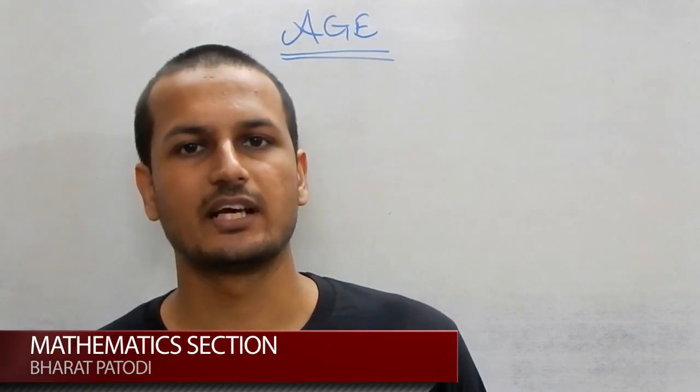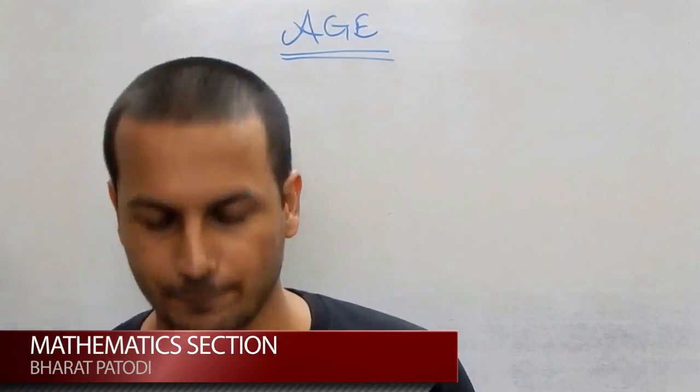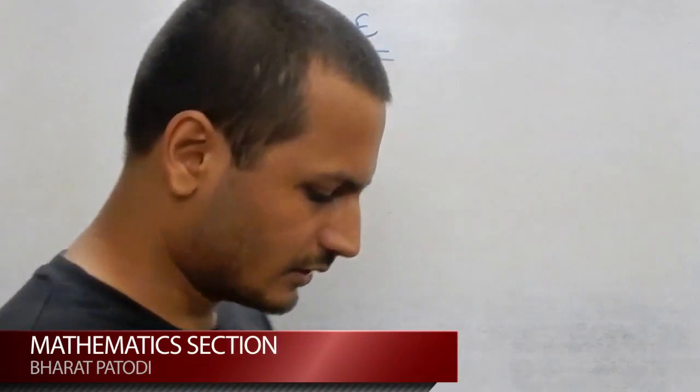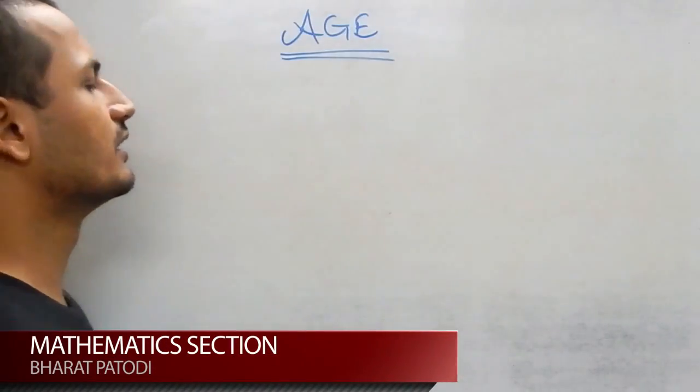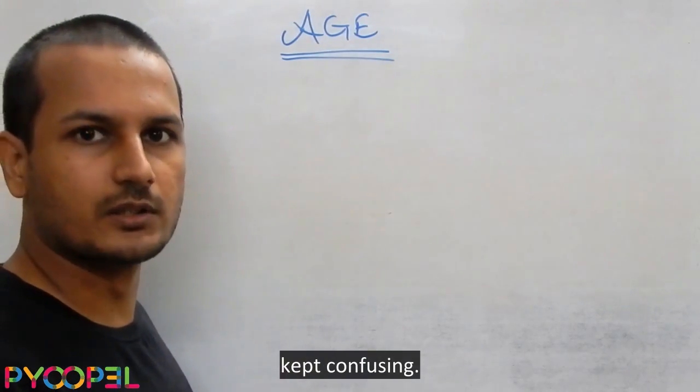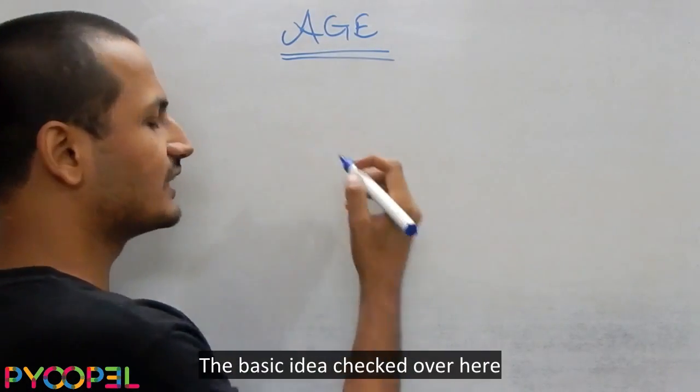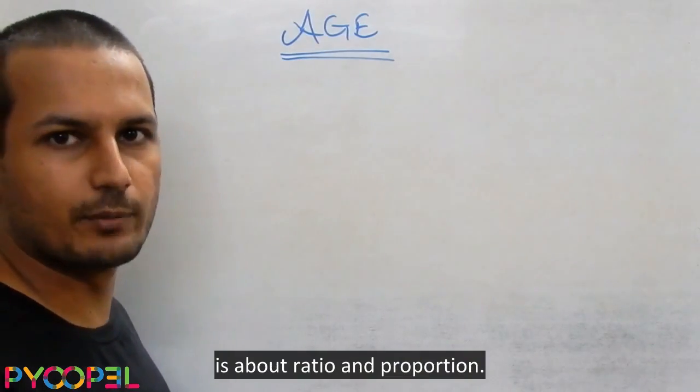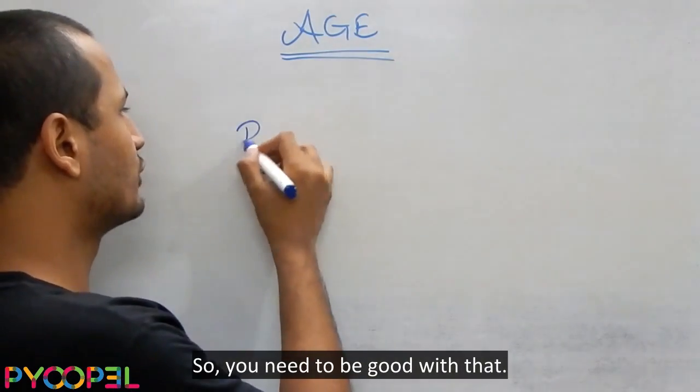In this lecture we will be covering questions about age. These questions are very simple except that the language is kept confusing. The basic idea that is checked over here is about ratio and proportion, so you need to be good with that.